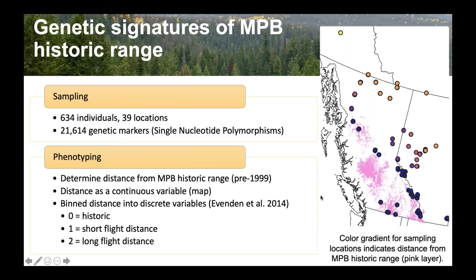We created a gradient away from the mountain pine beetle historic range as our phenotype. The closer to the range, the darker circles and purples; the farther away, the oranges and yellows. We used distance as a continuous variable in our phenotyping, and also binned distance into discrete variables — historic areas, areas within short-distance dispersal, and long-distance flight zones — to allow different statistical analyses.